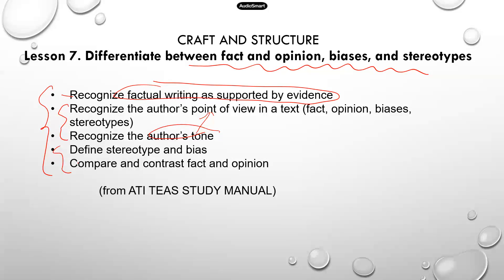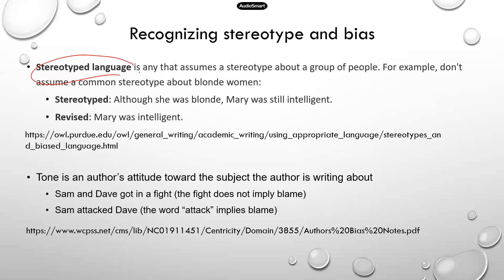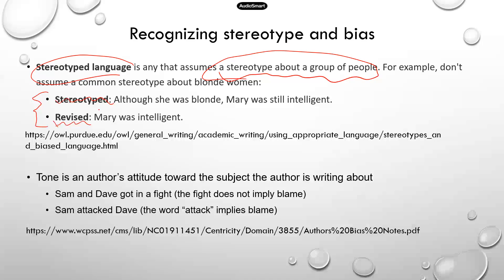The last two learning objectives are to define stereotypes and biases, and to compare and contrast fact and opinion. Stereotyped language is language that assumes a stereotype about a group of people. For example, a lot of people have a stereotype against blonde women. The stereotyped language would be: 'Although she was blonde, Mary was still intelligent' — this implies that blonde women are usually not intelligent. The revised, appropriate writing is simply: 'Mary was intelligent.'